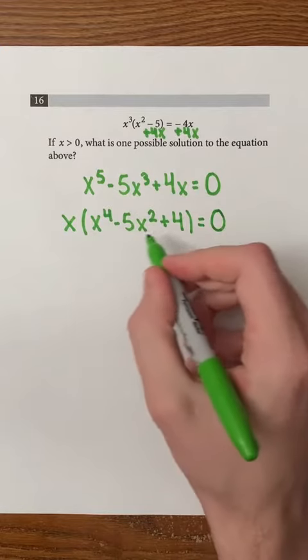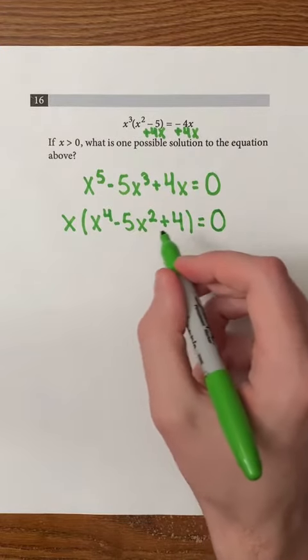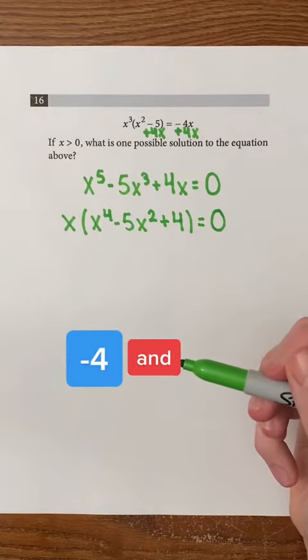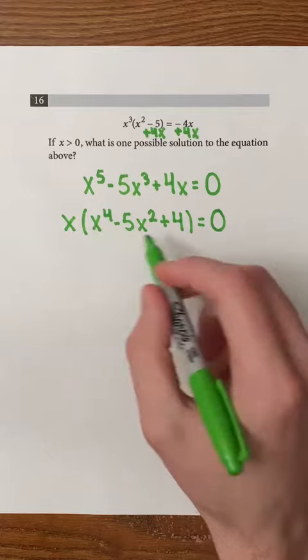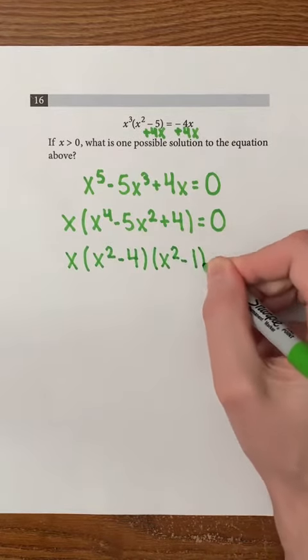Let's factor the expression into parentheses by finding two numbers that add to negative 5 and multiply to 4. Those two numbers are negative 4 and negative 1. Therefore, we can factor the expression as x squared minus 4 and x squared minus 1.